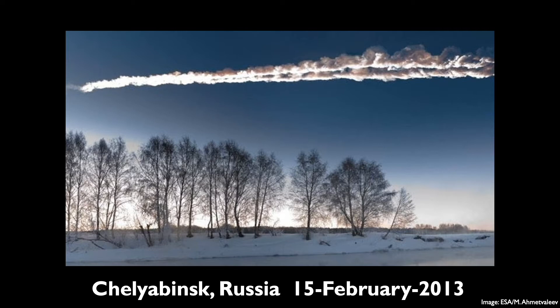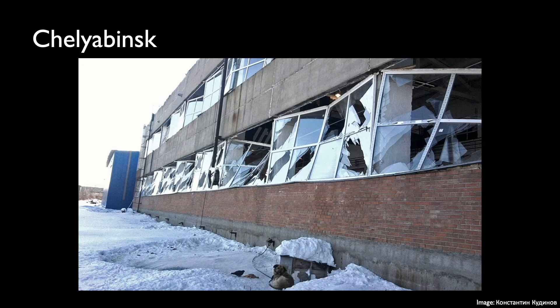You may have seen the Chelyabinsk meteor in the news in 2013 — a really good example of the damage a meteor can do. The Chelyabinsk meteor was about 20 meters or less in diameter. It shattered windows across six cities and hospitalized over 100 people, mostly due to injuries from broken glass. The shock wave released had about 20 times more energy than a World War II atomic bomb. Most of this meteor broke apart during atmospheric entry because its path was very oblique — if it had been more perpendicular to Earth's surface, it would have likely caused a large impact crater.